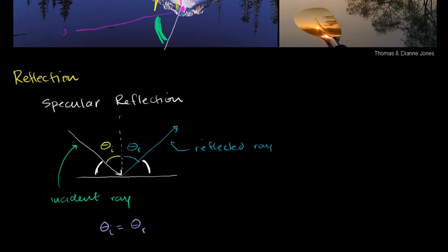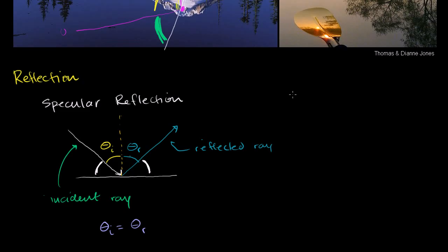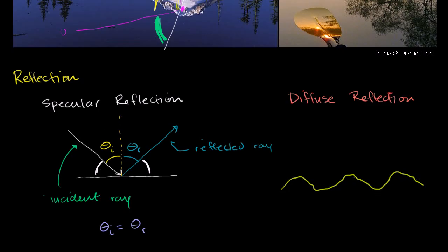Now, the other type of reflection is diffuse reflection. This is the type that may not be as obvious, but it's occurring everywhere you look. In diffuse reflection, the surface isn't smooth — it's not what we'd associate with a mirrored surface. In specular reflection, any light ray that comes in will always have its angle of incidence equal to its angle of reflection. If you come in at a steeper angle, you go out at a steeper angle. That's always consistent for specular reflection.